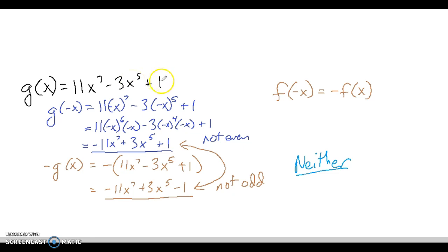Well, 1 is essentially the same thing as 1 times x to the 0. So this is an even power. So we have a mixture of odd and even powers, which means this one is neither even nor odd.